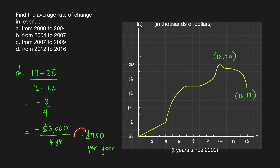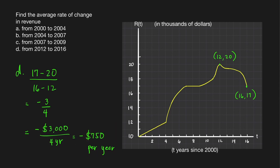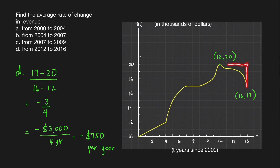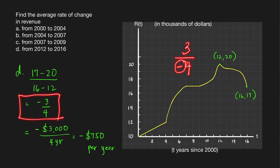The negative sign means that on average, from 2012 to 2016, the revenue is decreasing at a rate of $750 per year. We can also use rise over run to find this: moving from this point to this point, you rise by 3 units and run to the left by 4 units. Running to the left means negative 4, so when you run to the left it is negative, and to the right it is positive. The average rate of change is therefore negative 3 over 4.